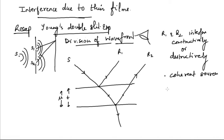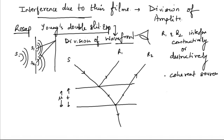Coherent sources have a constant path difference or phase difference, and both waves have the same frequency and wavelength since there is only one source. The key difference between the two experiments is that in thin film interference, the wave is partly reflected multiple times so the amplitude changes — the two waves have different amplitudes. Young's double-slit experiment is an example of division of wavefront, while thin film interference is an example of division of amplitude.